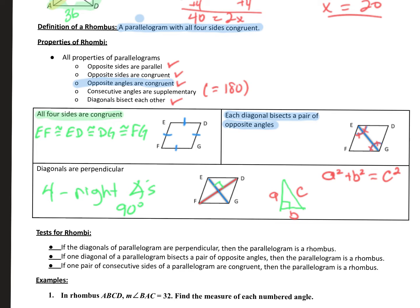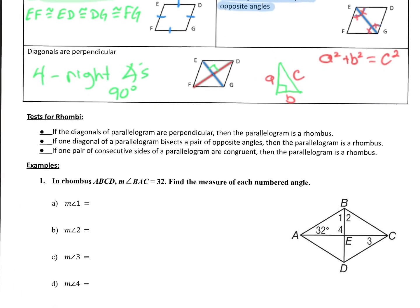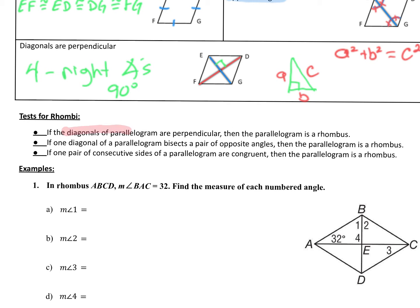We have tests to determine whether a parallelogram is a rhombus. The first test: if the diagonals of a parallelogram are perpendicular, then the parallelogram is a rhombus. The second test: if one diagonal bisects a pair of opposite angles, then the parallelogram is a rhombus. The third test: if one pair of consecutive sides of the parallelogram are congruent — consecutive, meaning next to each other, not across — then the parallelogram is a rhombus.